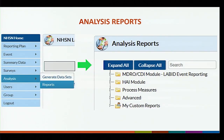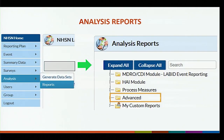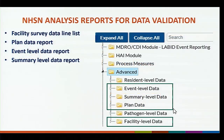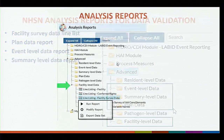Here are the reports available in NHSN for internal checks — both facilities and QIN/QIOs can pull these. Always generate data sets prior to creating reports to ensure data is up to date. If there are two people in the office, make sure everyone generates data before starting analysis. In NHSN, clicking on the analysis tab opens a folder. The reports of interest are in the advanced folder — we will look at event level, summary level, data plan, and facility data reports.